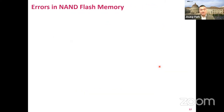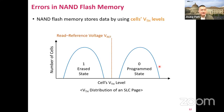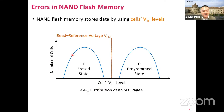Why does a read-retry happen? Read-retry is essential to guaranteeing data reliability of modern NAND flash-based SSDs. This shows the threshold voltage distribution of a page. The x-axis indicates a cell's threshold voltage level, and the y-axis indicates the number of cells that have a certain threshold voltage level. A coordinate (x, y) means the page has y cells whose threshold voltage level is x volts.